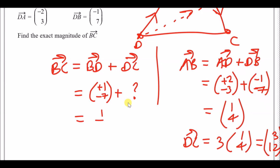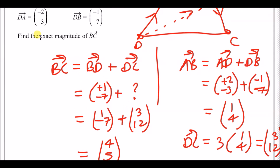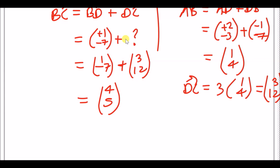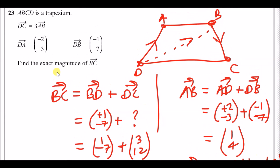So BC equals BD plus DC equals (1, minus 7) plus (3, 12) equals (4, 5). The exact magnitude uses Pythagoras: magnitude of (4, 5) equals the square root of 4 squared plus 5 squared, which is the square root of 41. Do not round this — the exact magnitude is root 41.